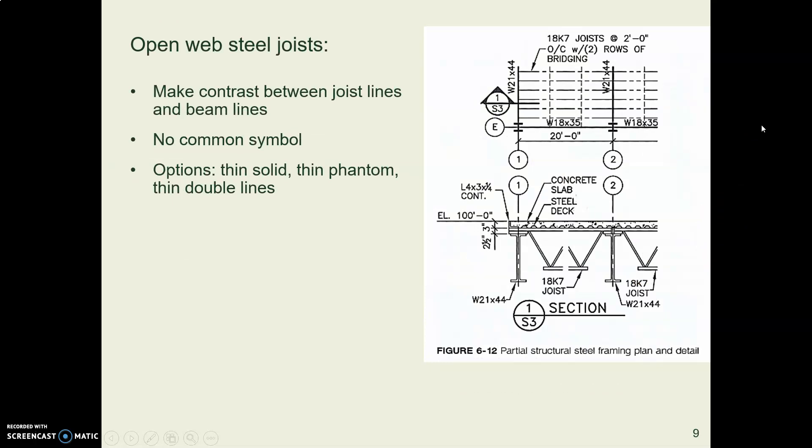Now open web steel joists, those are these truss looking things that are made out of lightweight, relatively lightweight steel, that you see in the ceilings of all kinds of commercial buildings and warehouses and so forth. So we use a lot of these in commercial buildings. There's no standard way to represent those things.